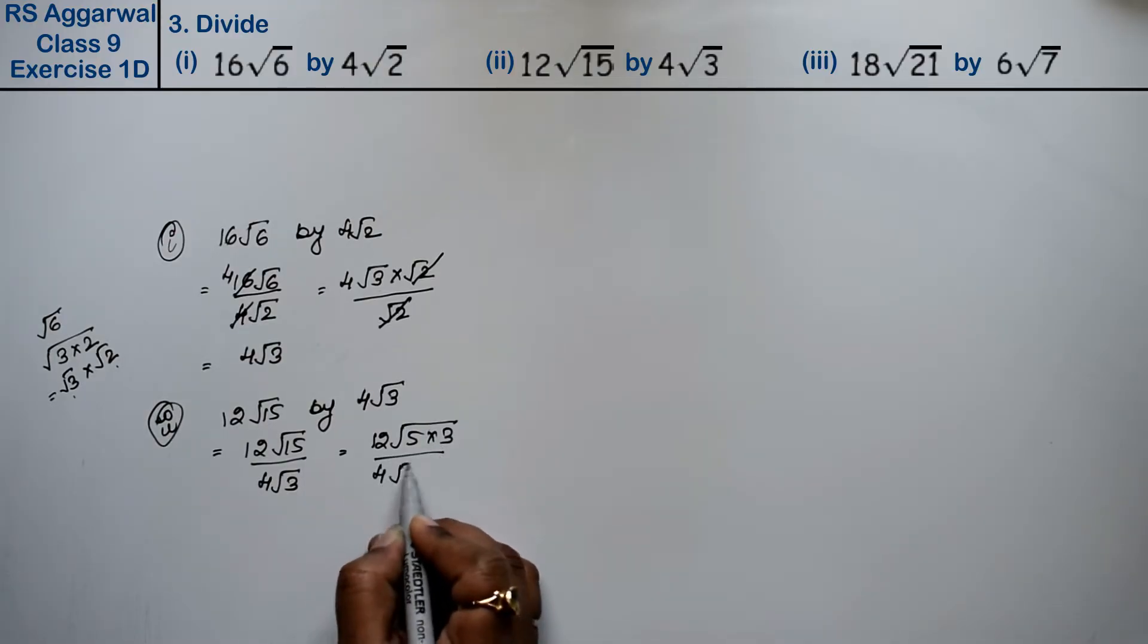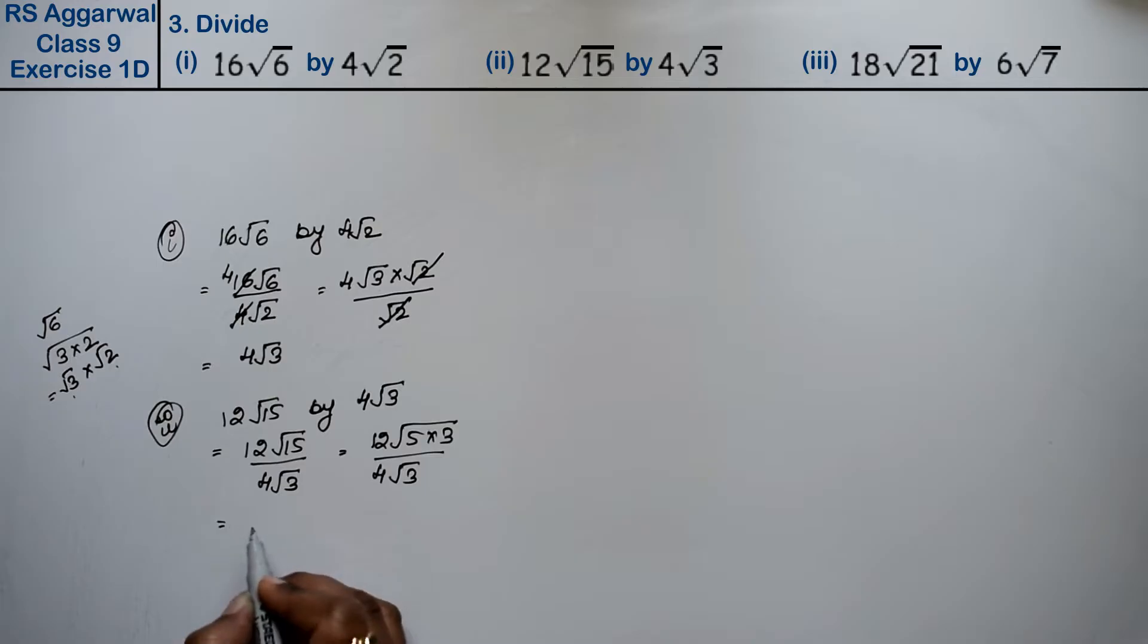We have 12 times √5 times √3, divided by 4√3.